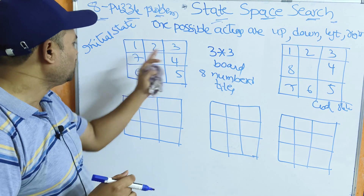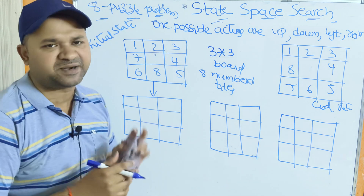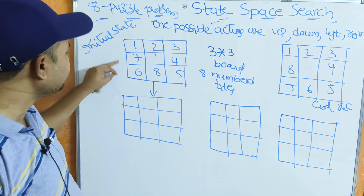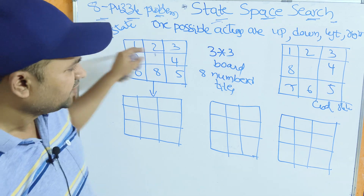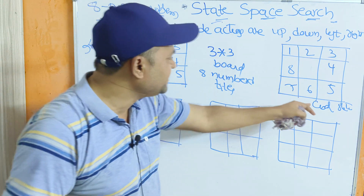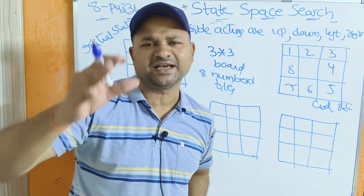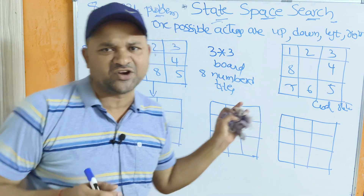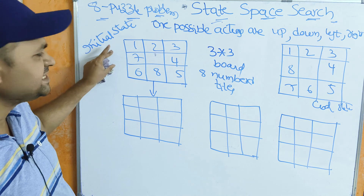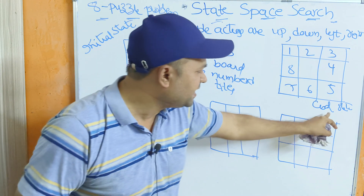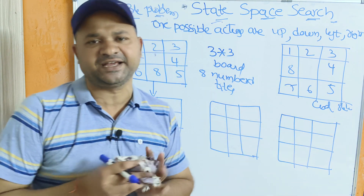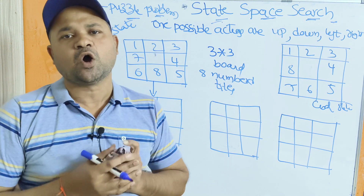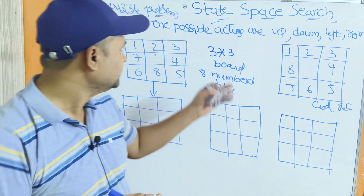The tiles numbered 1 through 8 are present and one tile is empty. This is the initial state of the system. Our target is the goal state — we can take any configuration. Here, we assume a specific initial state and need to produce a specific goal state by applying various operators or actions.